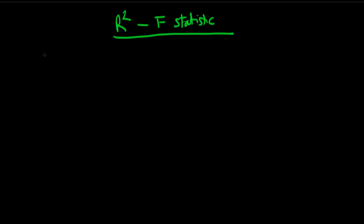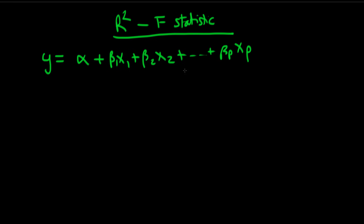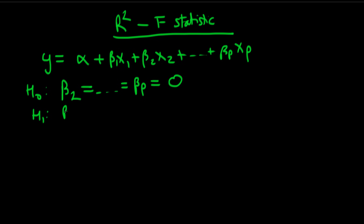So what's the idea here? Well, the idea is that we have some sort of regression equation which is y equals alpha plus beta 1 x1 plus beta 2 x2 all the way through to plus beta p xp. The null hypothesis which we're testing here is that beta 2 all the way through to beta p are all identically equal to 0. So the effect of variables x2 through to xp are essentially insignificant under the null hypothesis. And our alternative hypothesis is that some beta i doesn't equal 0, where i is a member of the set 2 to p.